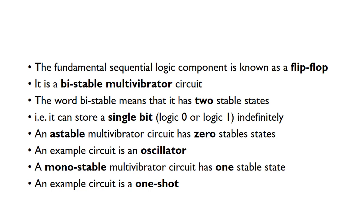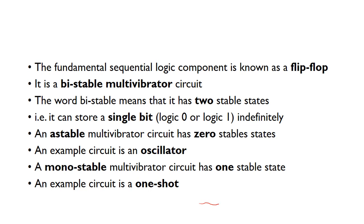The other type of multivibrator is a monostable, which has just one stable state. An example of a monostable multivibrator is known as a one-shot. It has one stable state — it might be in a state of zero, where it can stay for as long as required. You can then put it into state one, where it's unstable, so it stays there for a short while but then drops back to the stable state. We call this a one-shot because it effectively just generates a pulse.